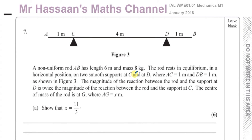Welcome back, this is Mr Hassan's Maths channel. I'm now going to be answering question number seven from January 2018 International A-level M1 Mechanics paper. This question is about statics. We've been told there is a non-uniform rod AB which has length six meters and mass eight kilograms. The rod rests in equilibrium in a horizontal position on two smooth supports C and D, where AC is one meter and DB is also one meter. The reaction at D is twice the reaction at C. The center of mass is at G where AG equals x meters. Show that x equals 11 over 3.